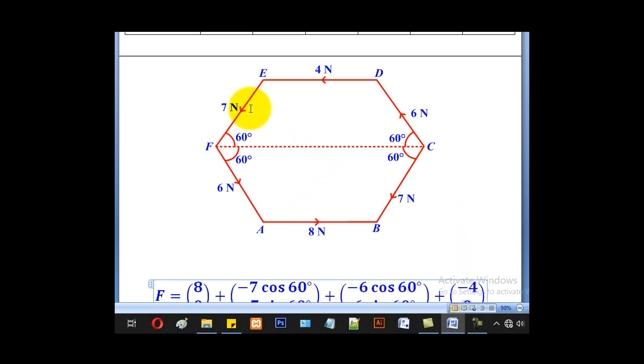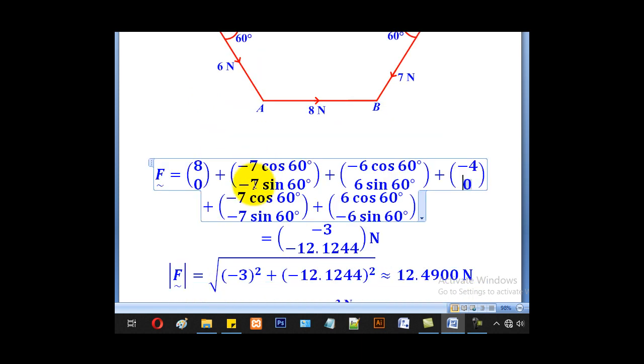For this 7 again, this is 60. So it will be negative 7 cos 60, negative 7 sin 60.